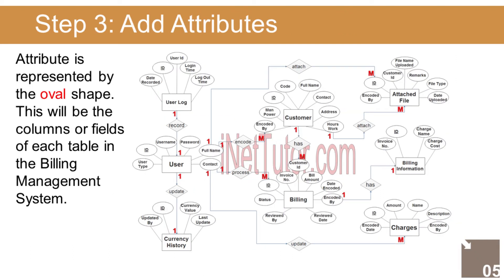The last part of the ERD process is to add attributes to our entities. The User entity has the following attributes: ID (primary key, represented with underline), Username, Password, Full name, Contact, User type. The User log entity has the following attributes: ID (primary key), User ID (foreign key), Login time, Logout time, Date recorded.